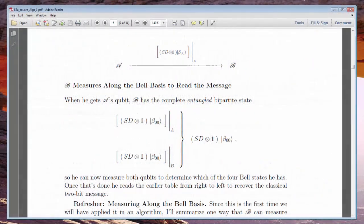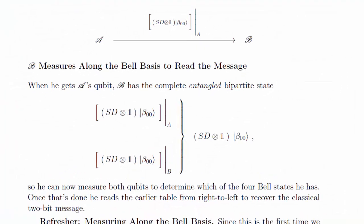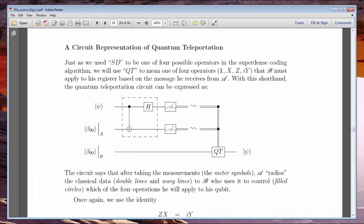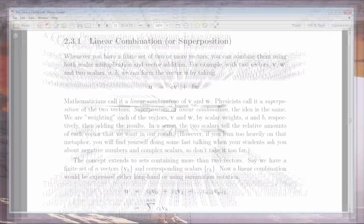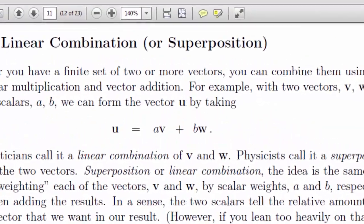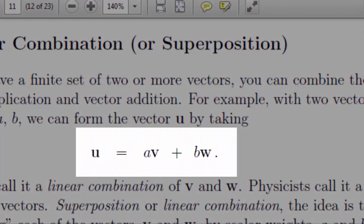I suspect that some of you might be here because you've heard about the term quantum entanglement, a way in which two qubits can become connected even when they're separated by vast distances. Guess what? Mathematically, quantum entanglement is no more than a basic vector concept that you'll learn today called linear combination, or as physicists like to call it, superposition.